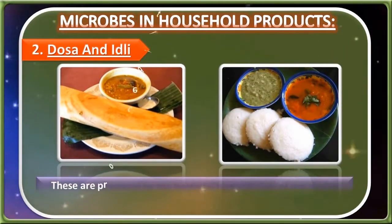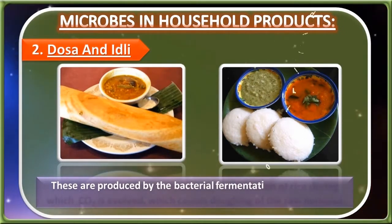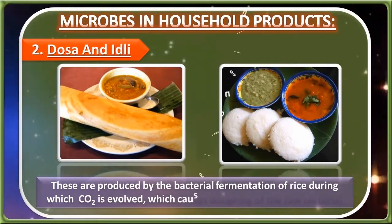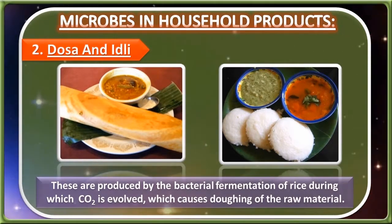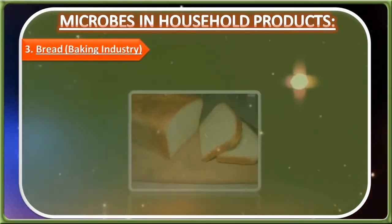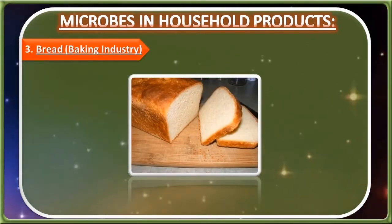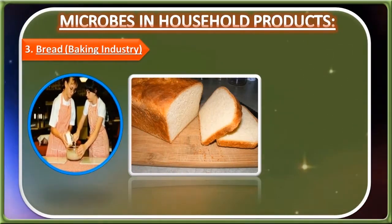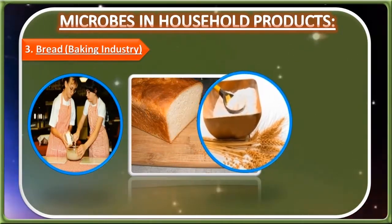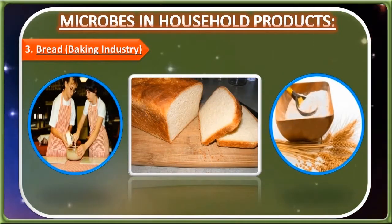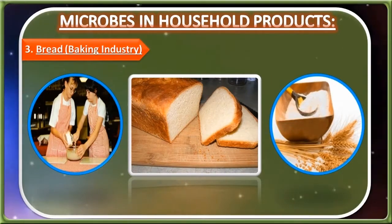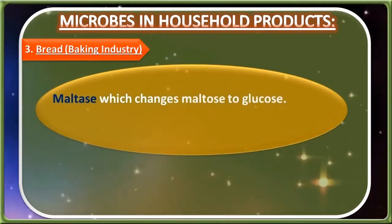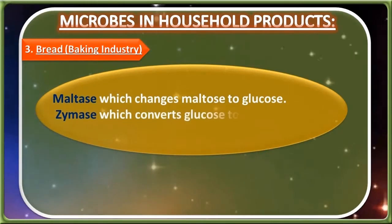2. Dosa/Idli: These are produced by the bacterial fermentation of rice, during which CO2 is evolved, which causes the doughing of the raw material. 3. Bread Baking Industry: Bread is prepared by adding baker's yeast Saccharomyces cerevisiae to the wheat flour. Yeast secretes the Zymase complex which contains a number of enzymes like maltase, which changes maltose to glucose.